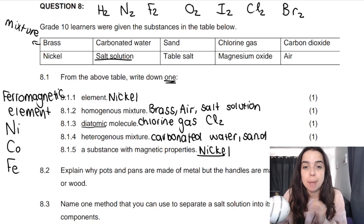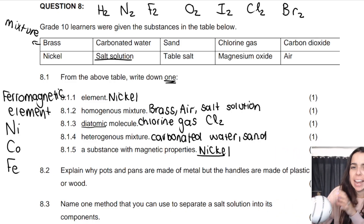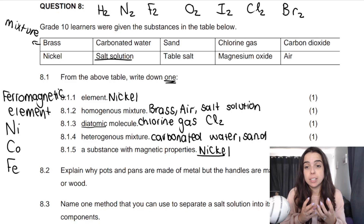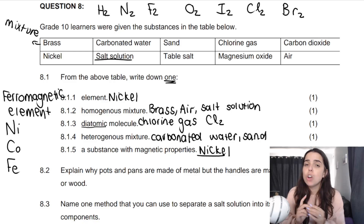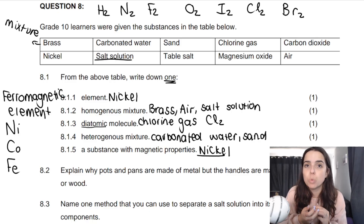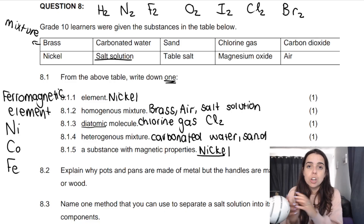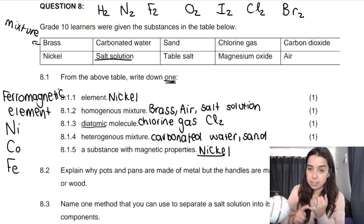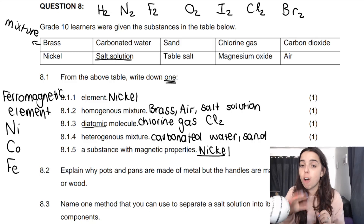The next question says: explain why pots and pans are made of metal but the handles are made of plastic or wood. Think about what metal does that plastic does not do in the context of pots and pans. Metals are good conductors of heat — pots and pans need to conduct heat well throughout so cooking happens. But for handles, you don't want good heat conduction because you'd burn yourself. Plastic and wood are thermal insulators. So pots and pans are metal because metals are thermal conductors, but handles are plastic or wood because they are thermal insulators.